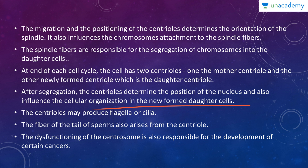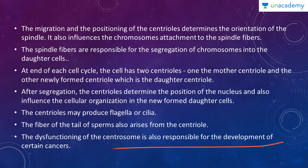After segregation, centrioles determine the position of the nucleus and influence cellular organization in the newly formed daughter cell. Centrioles may also produce flagella and cilia — the flagella of sperm arises from the centriole, since the sperm is the only human cell with a flagella, needed for swimming. Dysfunctioning of the centrosome is also responsible for the development of certain cancers. Every organelle provides its own importance to the cell, and even a small dysfunction can cause real problems for the organism. Thank you for watching — if you have any problem, write in the Q&A section, and please follow, rate, review, and recommend this course.